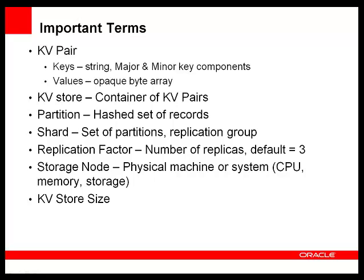A key-value store, or KV store, is a container of key-value pairs across all nodes — think database. A partition is a hashed set of records that will be stored in the same shard based on the major key. Replication factor is the number of replicas or copies of the data — a replication factor of three means there are three copies of the data in total for each key-value pair. A shard is a set of partitions, also known as a replication group. Automatic sharding, or partitioning, is done transparently by Oracle NoSQL Database, and is how horizontal scaling is achieved.